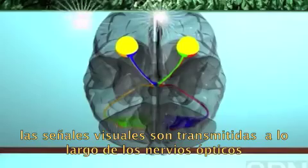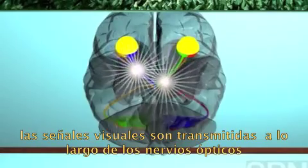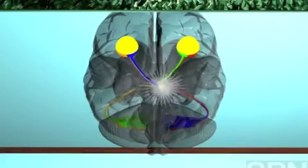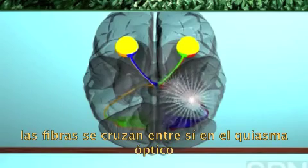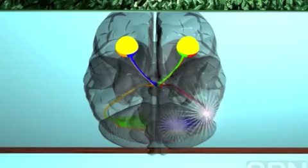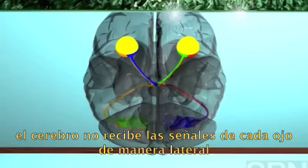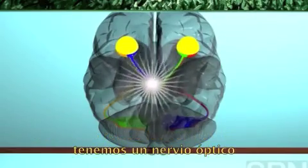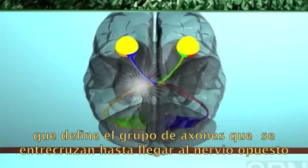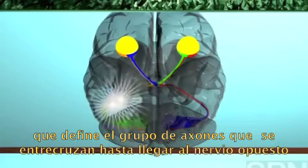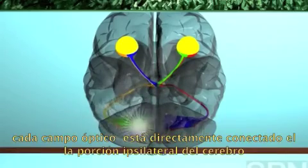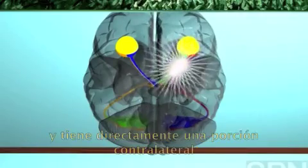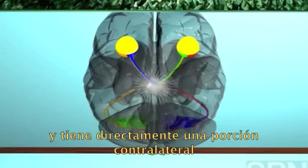The visual signals are transmitted along the fibers of the optic nerves. The fibers meet and cross at the optic chiasm. The brain does not receive signals from each eye unilaterally. Within an optic nerve, a defined group of axons crosses over to join the opposite optic nerve. Half of each optical field is directed to the ipsilateral portion of the brain, and the other half is directed to the contralateral portion.